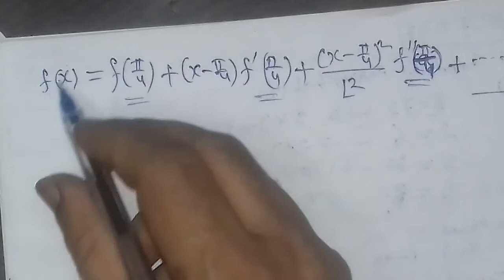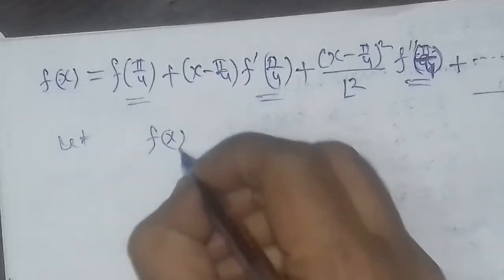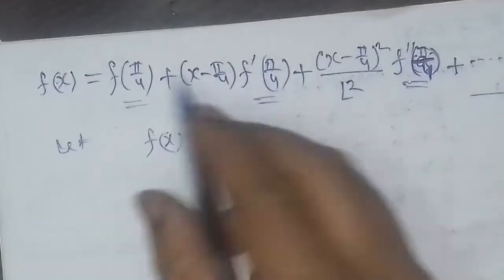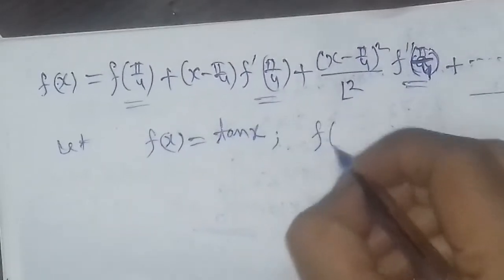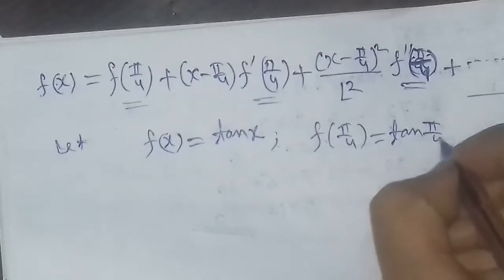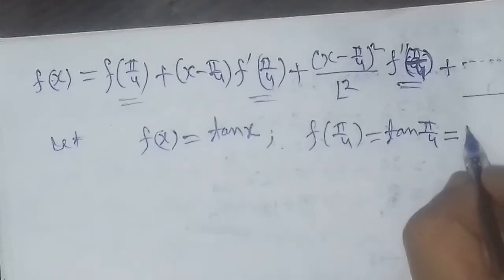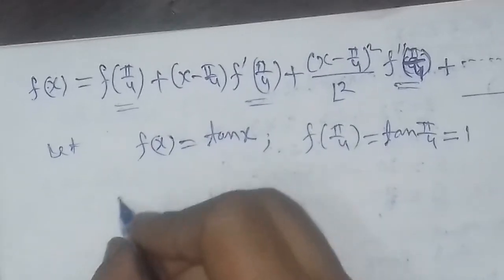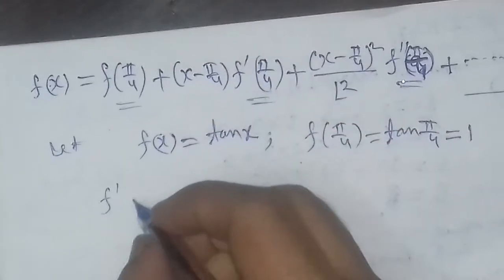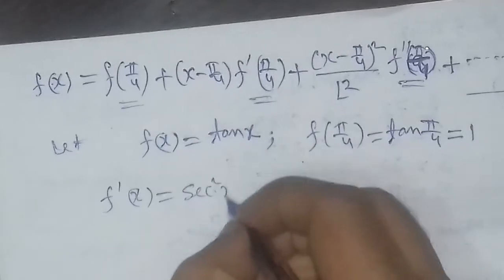Our function f(x) is tan(x). The value of f(π/4) — that is tan(π/4), which is tan(45°) — equals 1. Now we need to find the second term value, so we compute f'(x). The derivative of tan(x) is sec²x.